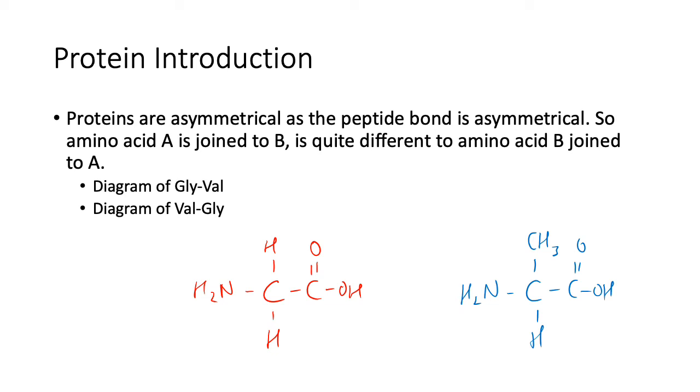Generally they're not in this form because they should be in zwitterion form, but the point is that this here and that there, at least one of those and that there as well, those two go away and then they form that structure there. The idea is that this structure is asymmetrical.